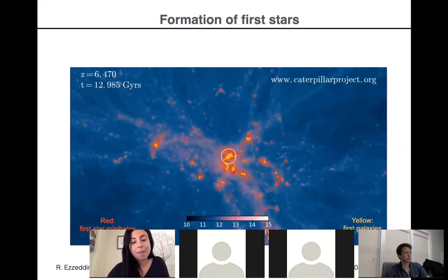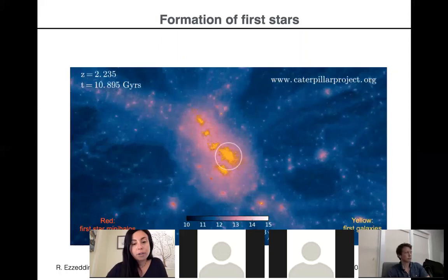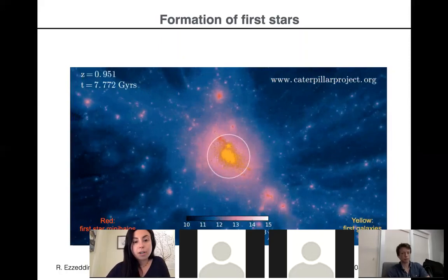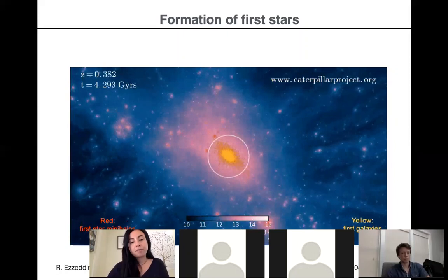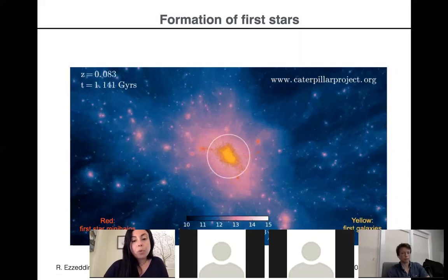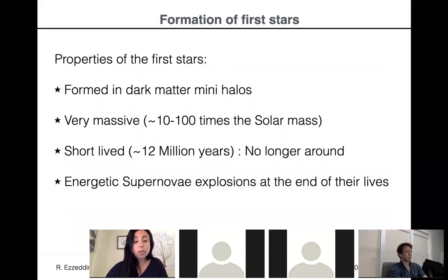I'm showing here a video of simulations done by Brandon Griffin, a former postdoc at MIT in the group of Anna Frebel, who tried to simulate the very formation of the first stars. You can see in yellow and red the formation of a Milky Way-like galaxy from the hierarchical collapse of mini halos. We believe the very first stars must have formed in these mini halos. From these simulations and others, the relevant properties of the first stars are the following.